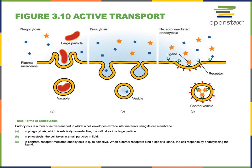After the ligand binds to the receptor, the endocytosis process is initiated to form an inward bud from the plasma membrane. Eventually, that inward bud pinches off and creates a vesicle containing the ligand brought in from the extracellular environment. This vesicle is known as a coated vesicle because it is coated with the clathrin protein, which helps regulate the receptor-mediated endocytosis mechanism.